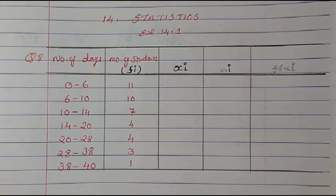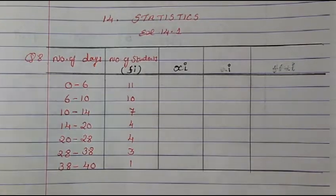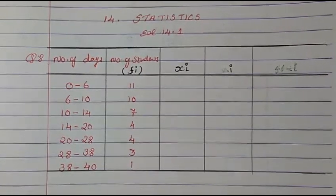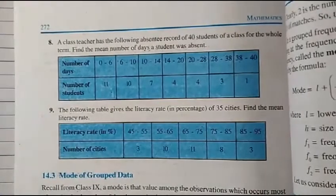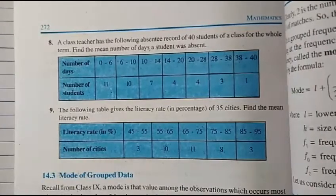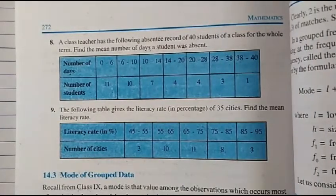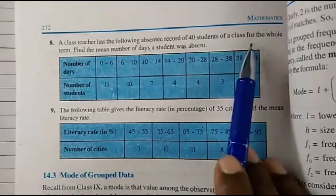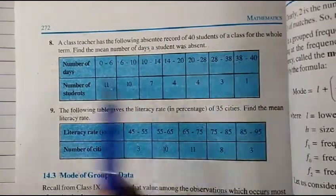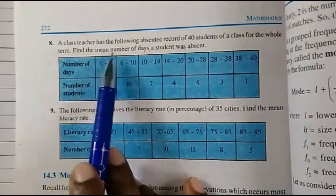Welcome to Mash Math. Today we are going to study Chapter 14 Statistics, Exercise 14.1, Question 8a. A class teacher has the following absentee record of 40 students of a class for the whole term. Find the mean.